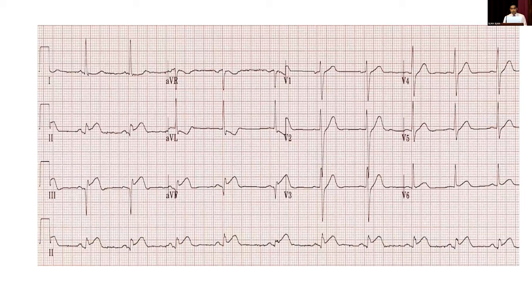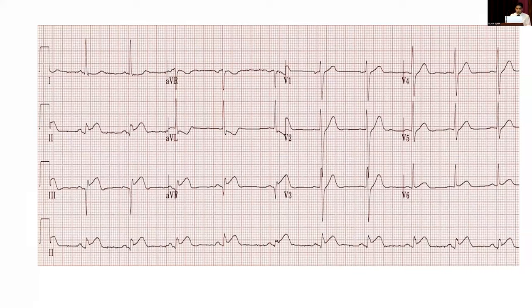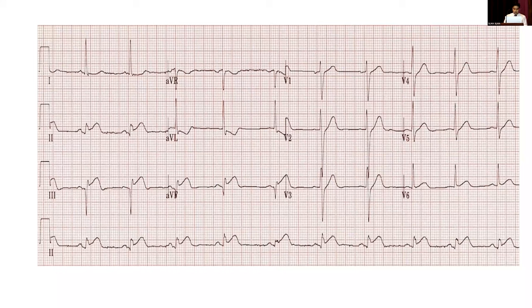This is the ECG taken at the local hospital. It shows significant ST elevation in inferior leads — L2, L3, and aVF — with reciprocal changes mainly in aVL. There are no features of arrhythmias. V1 to V6 appears normal. The diagnosis is inferior ST elevation myocardial infarction, which is acute.